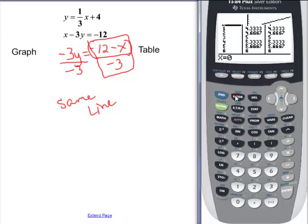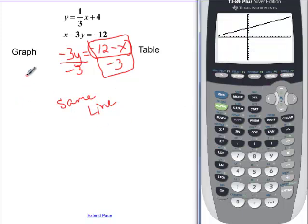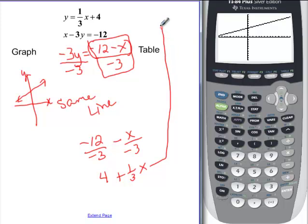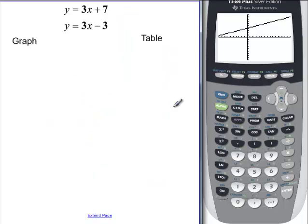If I go back and look at my graph so I can sketch it, it looks something like this. If I had taken negative 12 and divided by negative 3, that would have been positive 4. And if I had taken my negative X and divided it by negative 3, that would have been one-third X, which you'll notice is the same as the top equation. All right, let's look at another one.